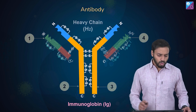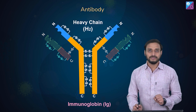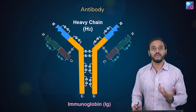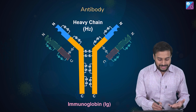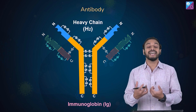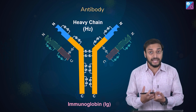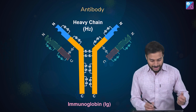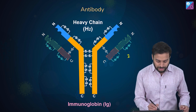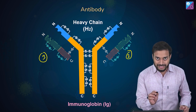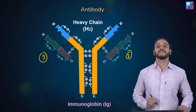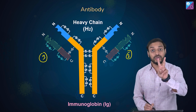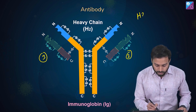These four chains can be divided into two types. First are the heavy chains — they are longer, meaning they are made of more amino acids, so their molecular weight is heavier compared to the shorter chains. Since there are two of them, they are called H2.